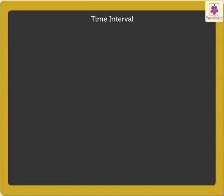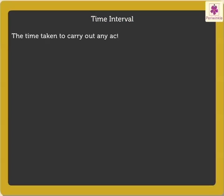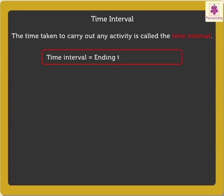What do we mean by Time Interval? It is the time taken to carry out any activity. For finding the Time Interval for a particular activity, we need to subtract the starting time of the activity from the ending time of the activity.